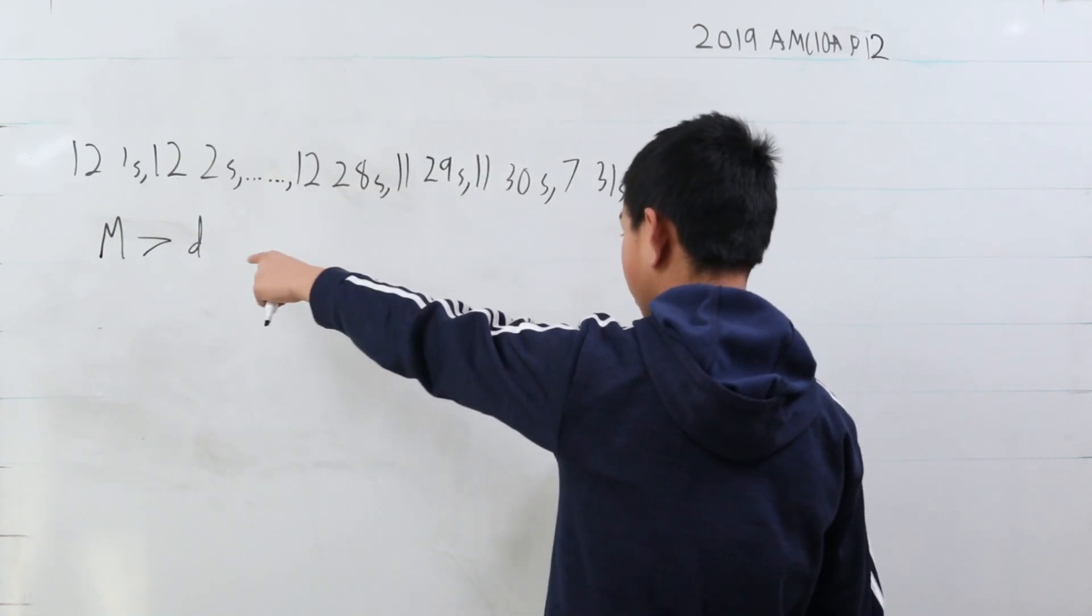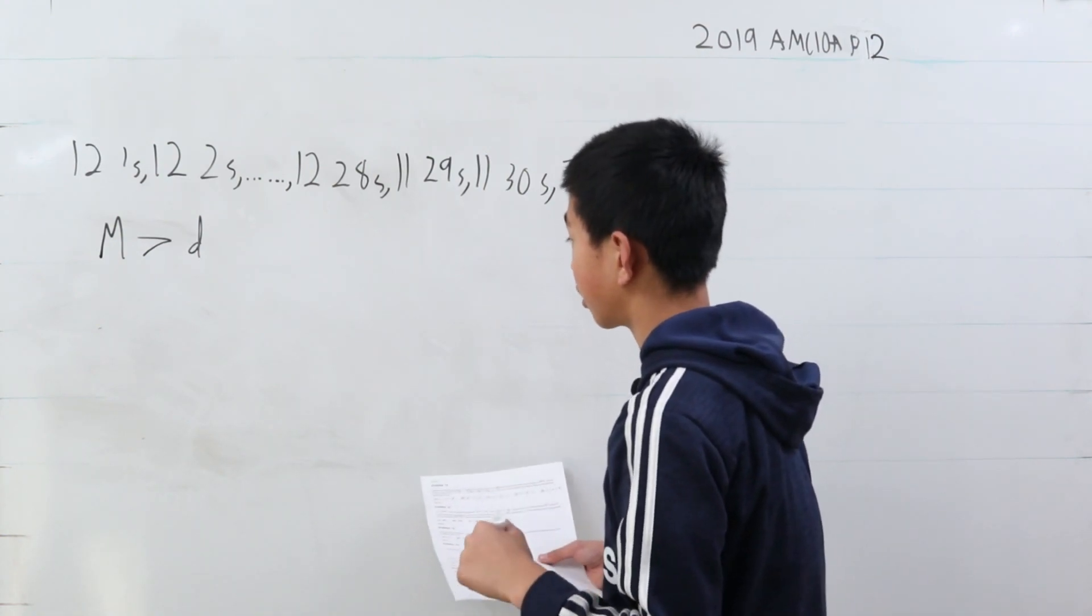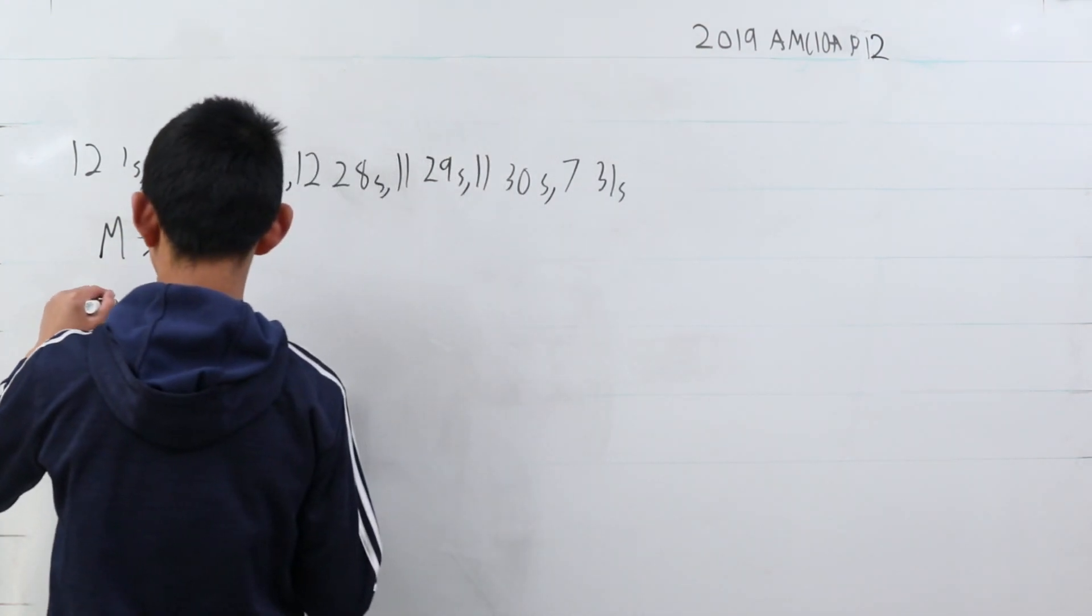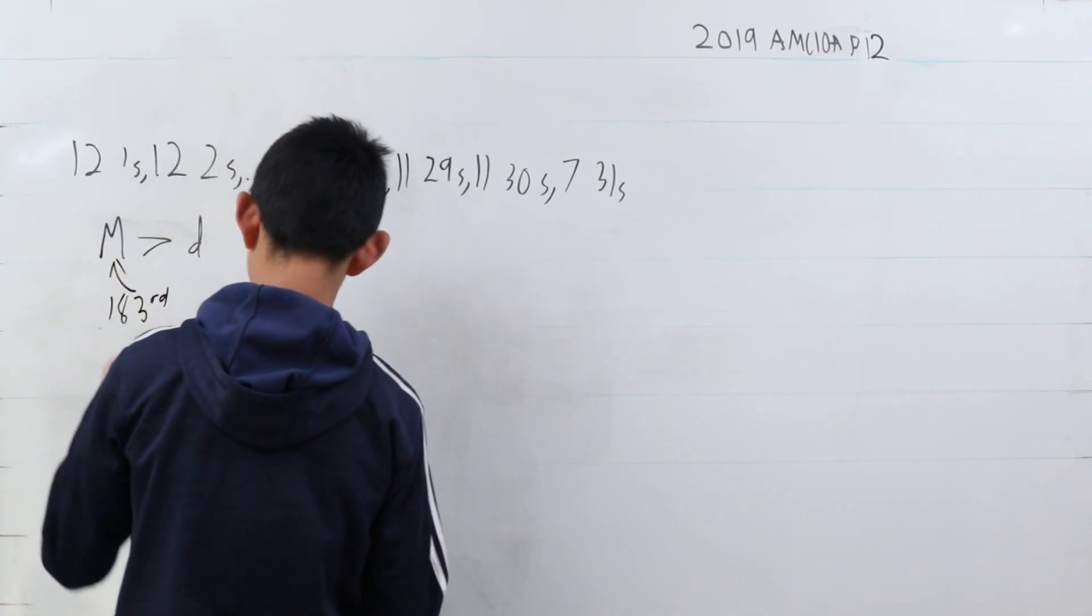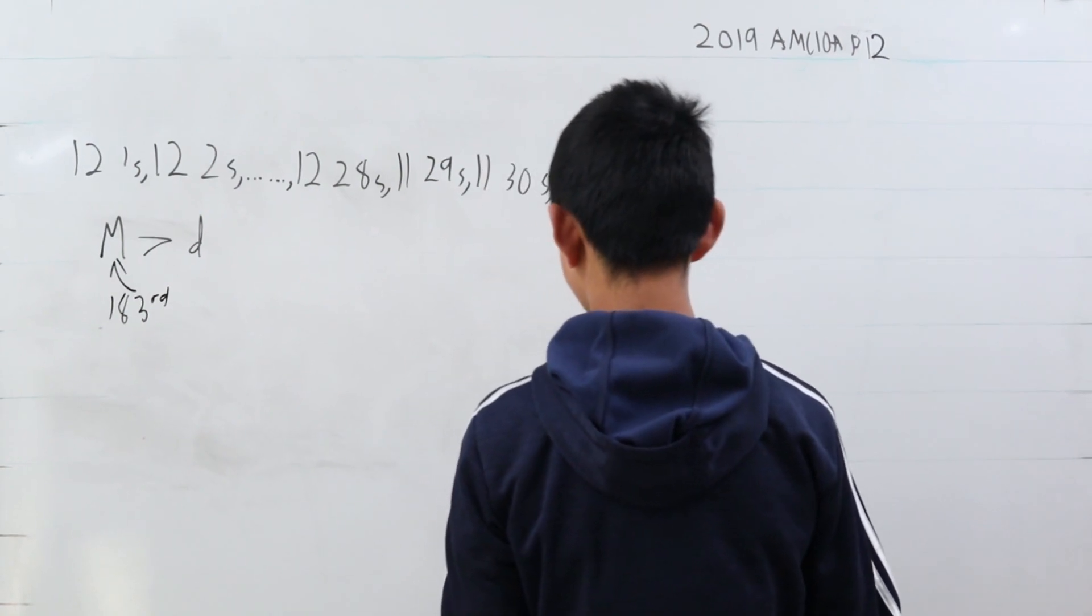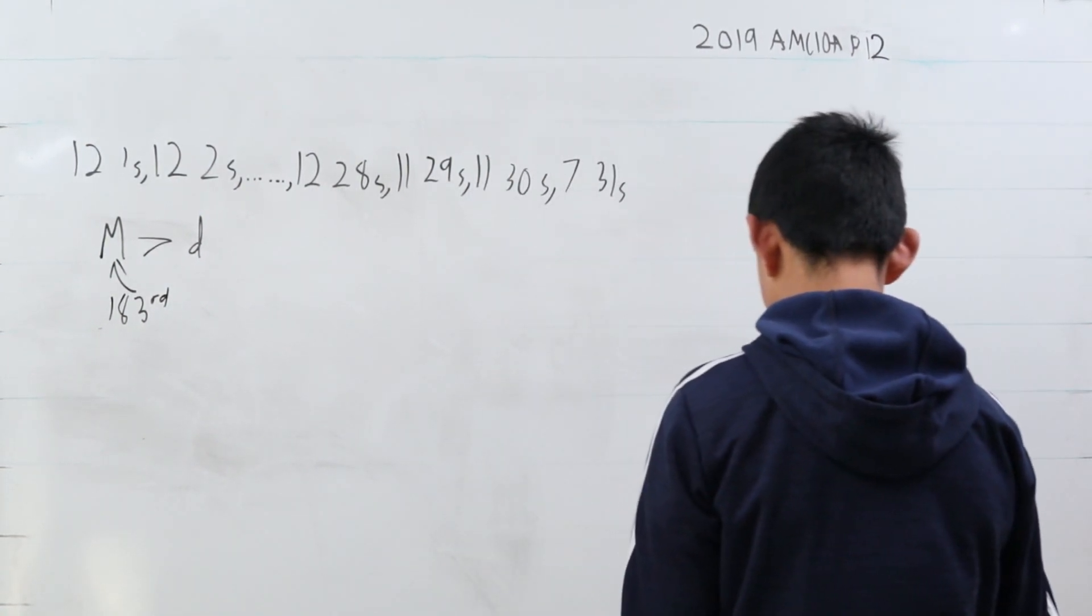Since there are 300 terms here, because there are 300 days in a year, this would be the 183rd term in the year. Well, what is that?